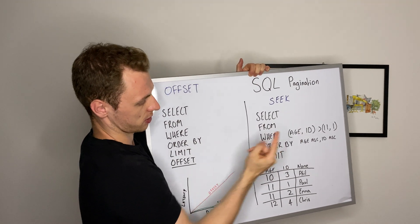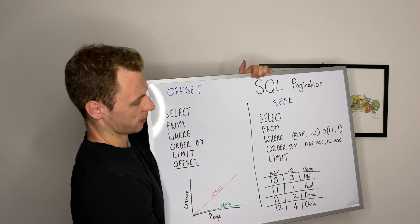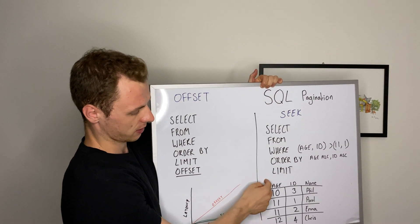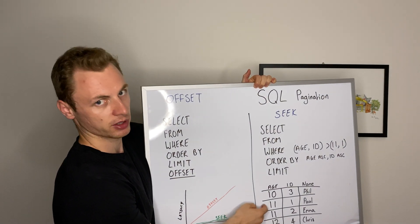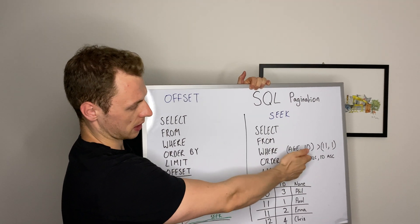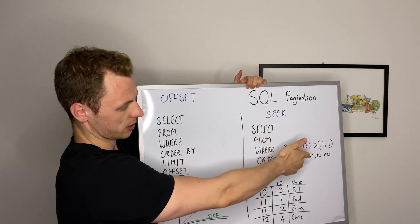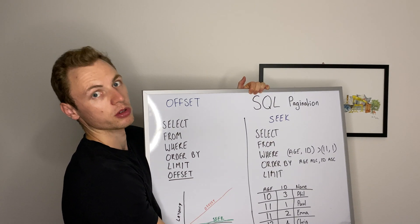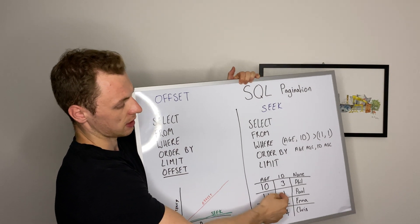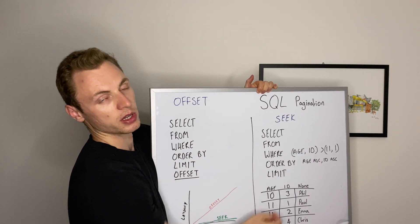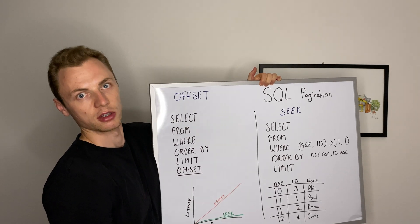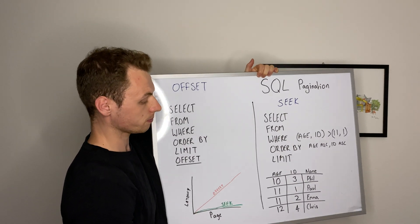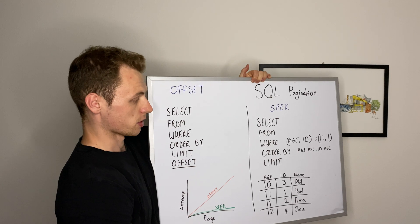We then select the age which is 11 because it's the last row. We then put age in here, select all where age is greater than 11, we jump and we start here. So it's super important that you have a unique ID in this clause or else you could have missing data in your result sets, which is not good.